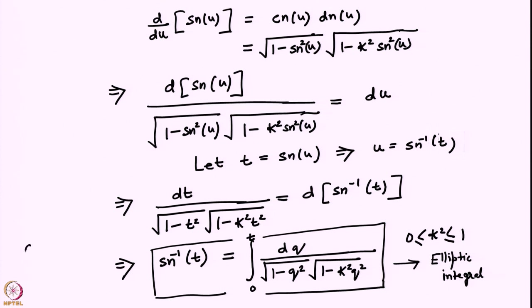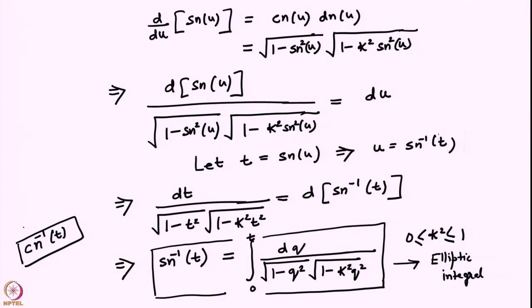Similarly, I encourage you to find the integral representation of CN⁻¹(t). You can follow the same procedure: start from d/du of CN(u) = −SN(u)·DN(u), express the entire right-hand side in terms of CN(u), bring all the CN(u) terms to the left-hand side, and follow the same steps — you will get another elliptic integral. It is important to know these integrals because frequently when we encounter them while solving nonlinear ordinary differential equations, we can replace the integral by a known function.